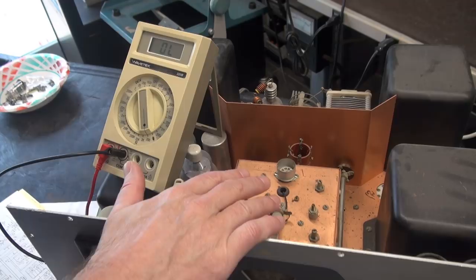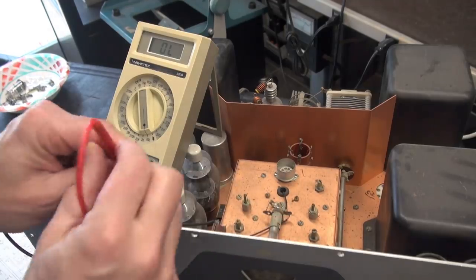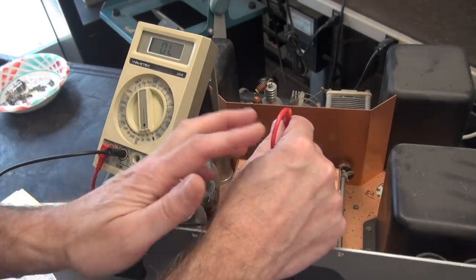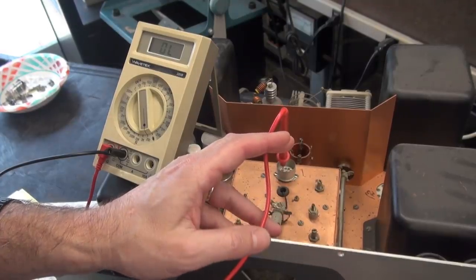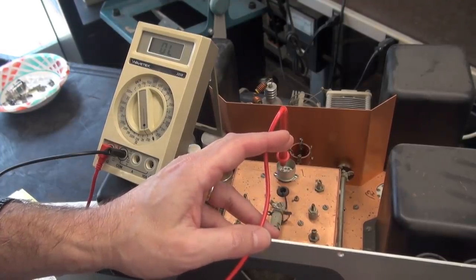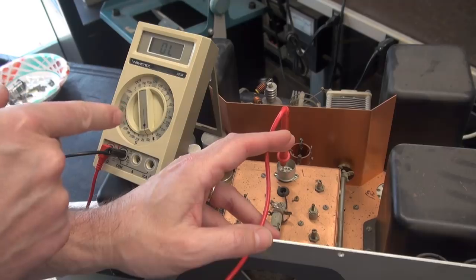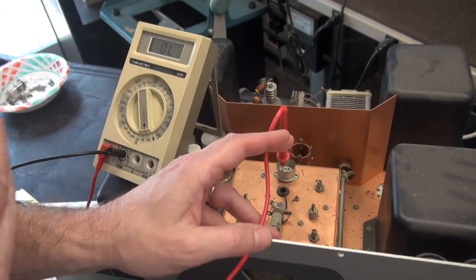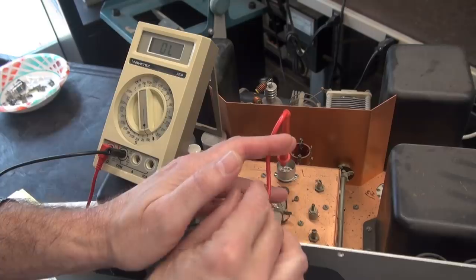The 6AU6 tube from the VFO is removed so I can get to pin seven, which is a cathode. And when I do the CW phone operation, you should see that line ground if the key is closed. In this case, the key is not installed, so it's automatically closed.